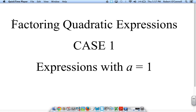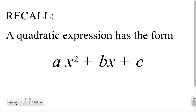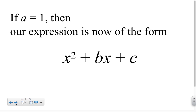Factoring Quadratic Expressions, Case 1: expressions with a equal to 1. Recall, a quadratic expression has the form ax squared plus bx plus c. If a is equal to 1, then our expression simplifies to the form x squared plus bx plus c. This is the form we will work with for the following factoring examples.